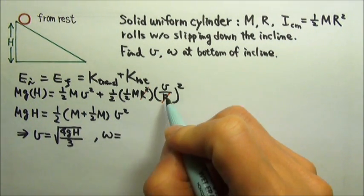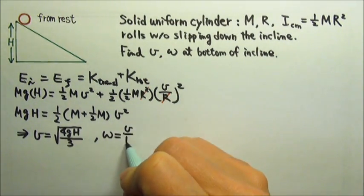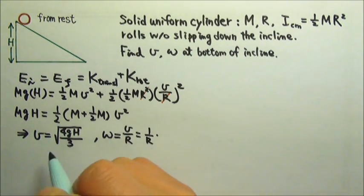And ω is v over r. So it is 1 over r times that.